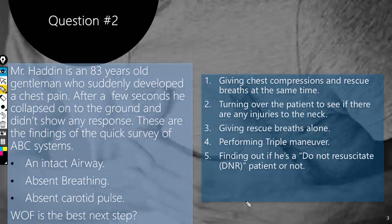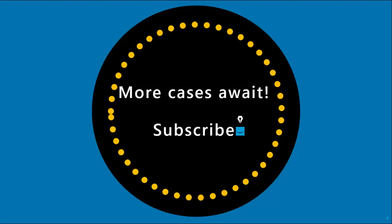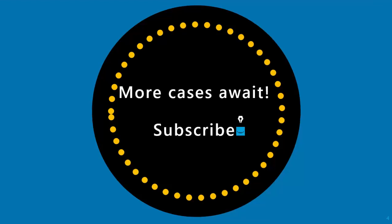The fifth answer — finding out if he is a do-not-resuscitate patient — is completely wrong. Unless you are informed otherwise, you always perform basic life support. Thank you for watching. If you haven't watched the previous video about basic life support, the link is given here. Another case series regarding basic life support is coming up next week. Please subscribe and share the video among friends if you found this useful.